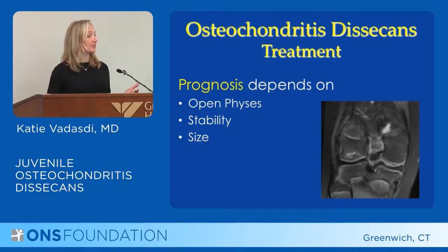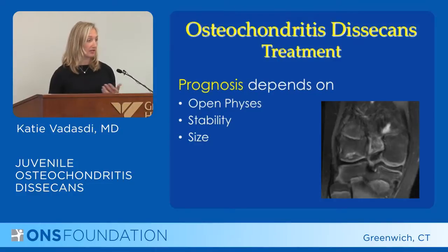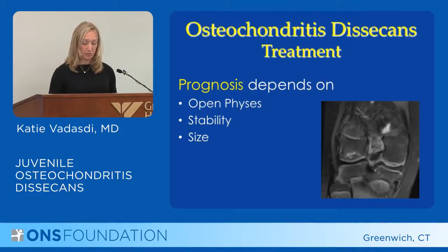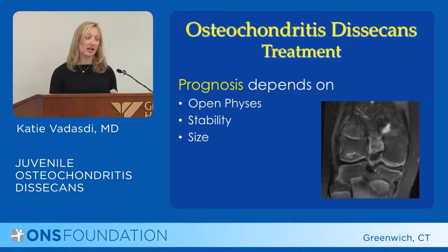The prognosis — how well is this patient going to do — depends on if the physis is open. These injuries are thought to occur before the physis closes, but sometimes patients don't present until later in their adolescent or early adult years because they've just had an aching pain. If they still have the lesion at that time, the prognosis is not as good. If we catch it earlier and treat it appropriately, they often heal and go on to have normal function. The stability of the lesion matters too — no loosening means better prognosis — and the size is very significant: the smaller the lesion, the better the prognosis.